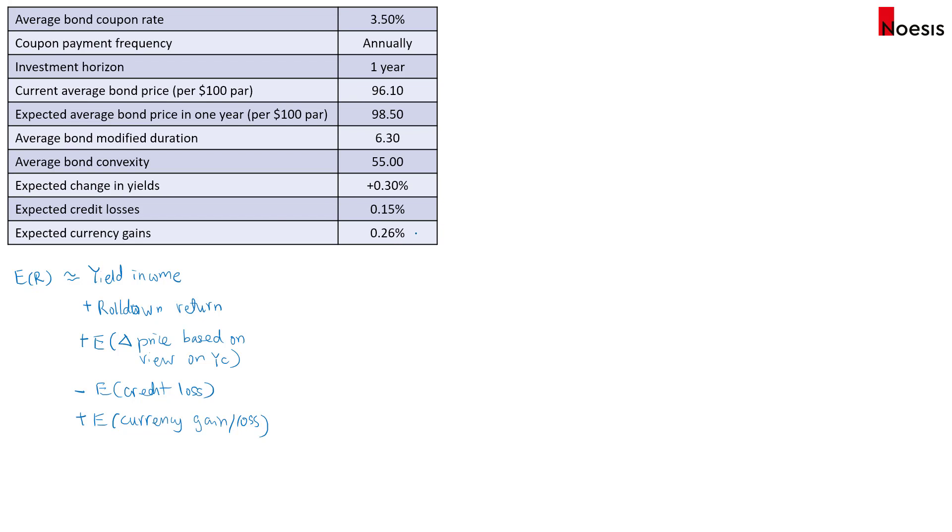So we already have the expected currency gain and the expected credit loss given. So we just have to compute these three items 1, 2 and 3.